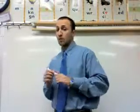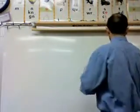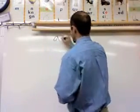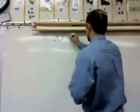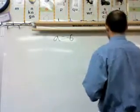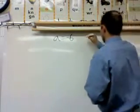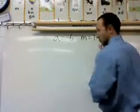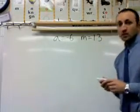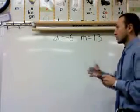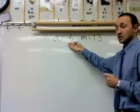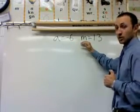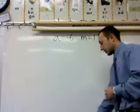For the next few problems that we're going to do together, we will say that A is going to be equal to negative 6, and M will be equal to 1.3. So whenever we have an expression with the letter A, we're going to replace it with negative 6. If our expression has M, we're going to replace it with 1.3.